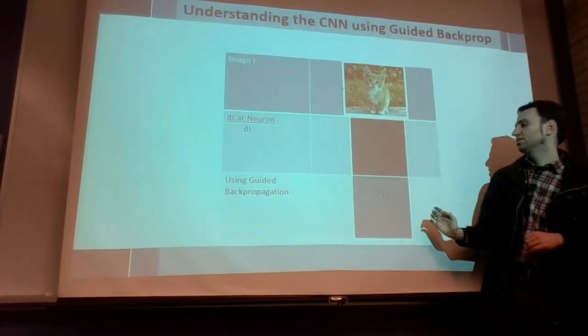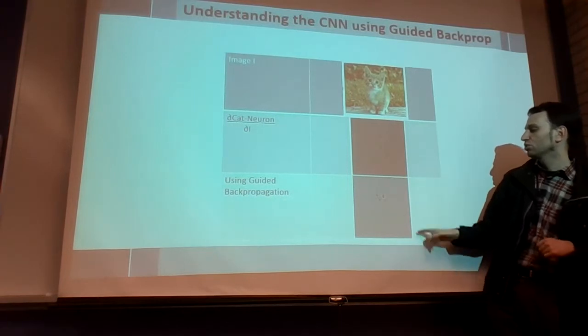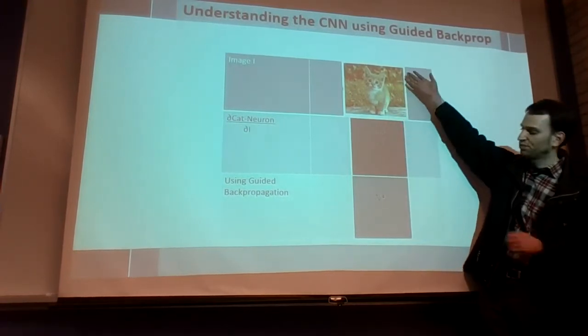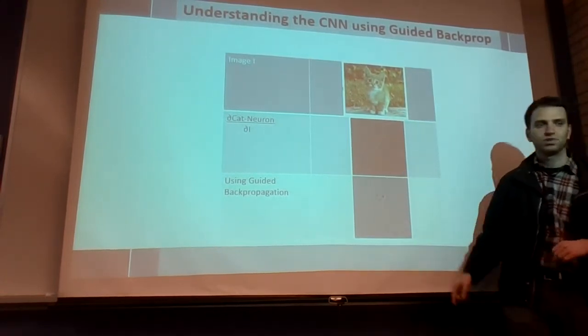So if you use guided backpropagation on the other hand, what you'll see is that what's important for the cat output for this particular network, this particular image, is those kind of round eyes.